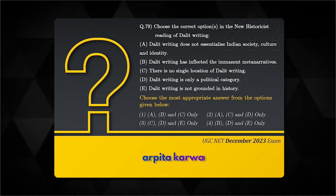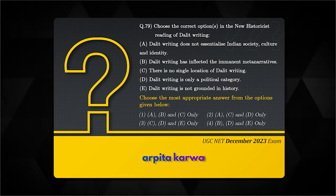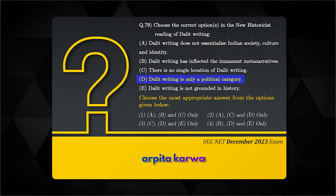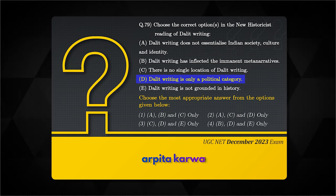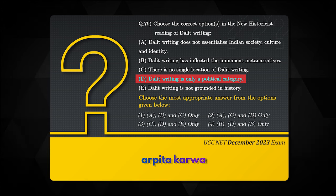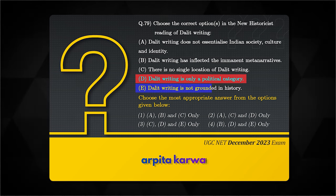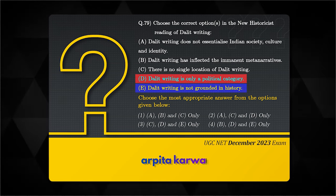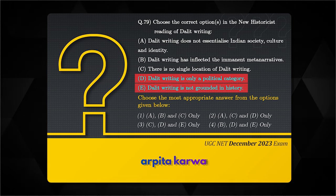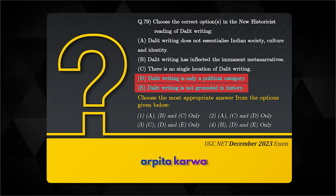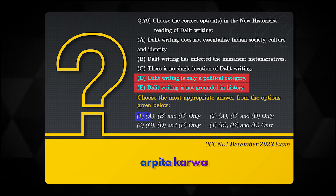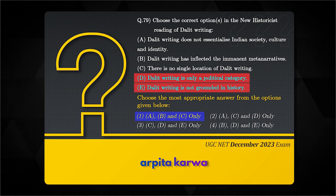After seeing all the options, you can very easily identify that option D — which says 'Dalit writing is only a political category' — can be marked as wrong. Similarly, option E, which says 'it is not grounded in history,' is clearly wrong. Hence, by eliminating options D and E alone, we can land at the correct answer.